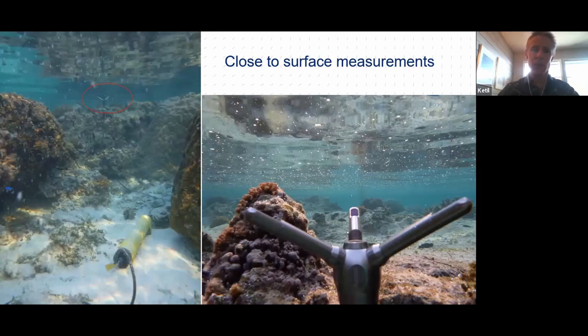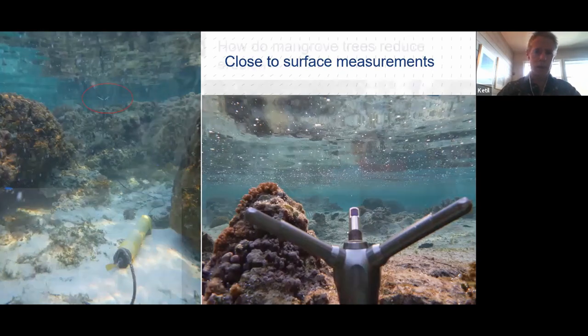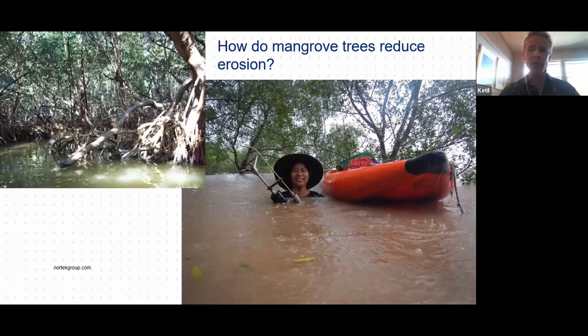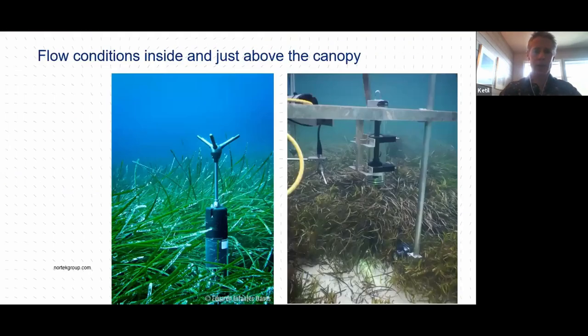This application example is also from coral reefs, but in this setup, the measurements are made close to the surface instead. So you see here the probe is oriented towards the surface and measurements are done only a couple of centimeters below the surface. Scientists are quite often concerned with what happens with mangrove trees and how these can reduce erosion. The mangrove roots and branches, they construct a complete maze and it's very difficult to measure inside of these, especially if you use an instrument with a large sampling volume. So again, the vector is a very useful tool in these highly detailed measurements that are done in between the roots of a mangrove tree.